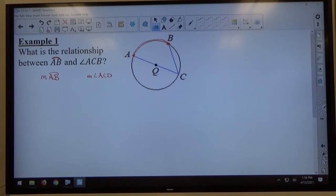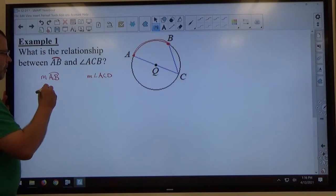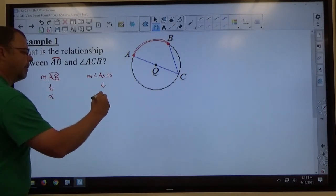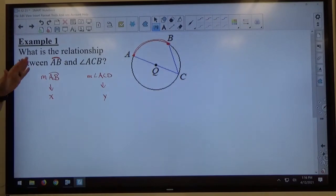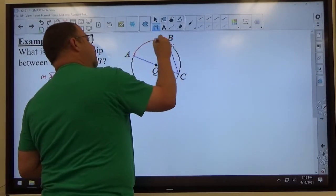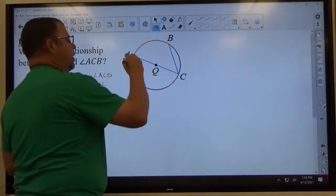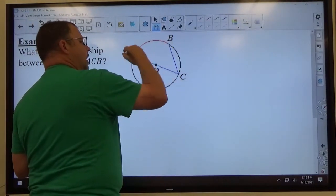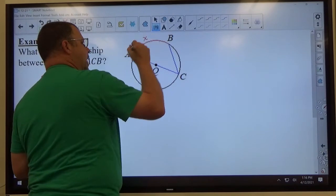To start off with, I'm going to assume they're different, so I'm going to name them something. I'm going to call the measure of arc AB X, and I'm going to call the measure of angle ACB Y. I'm going to identify those things in my picture here. Can everybody agree that if we're talking about the measure of arc AB, the angular measure of A to B is going to be called X.